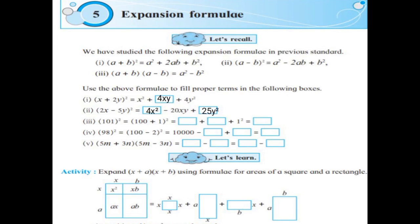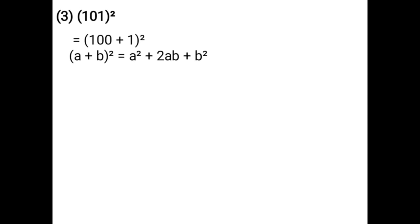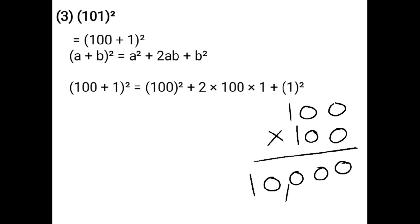Next: 101 whole square. The expansion form of 101 whole square is already given as (100 + 1) whole square. You have to use the formula of (a + b) whole square: a² + 2ab + b². Here a is 100 and b is 1. You have to write the expression form: a² + 2ab + b², that is 100² + 2 × 100 × 1 + 1².